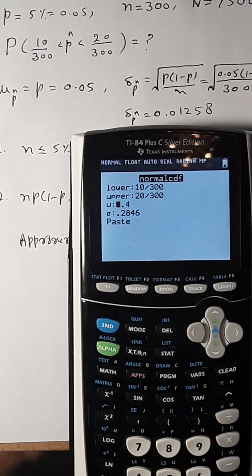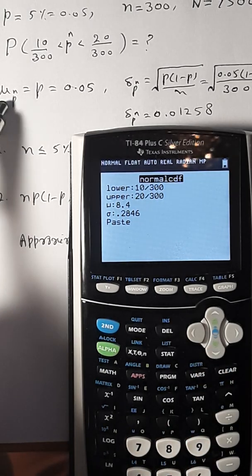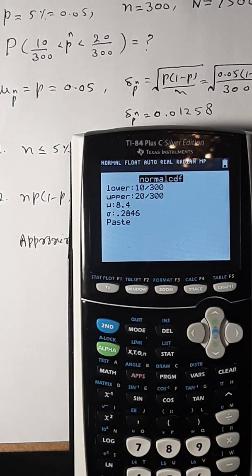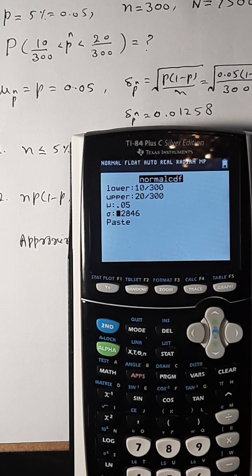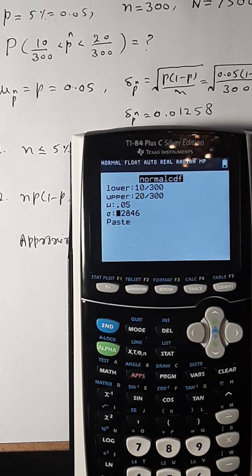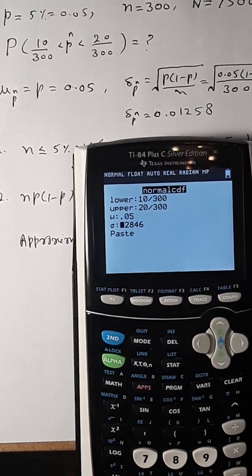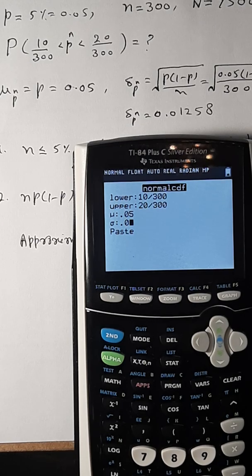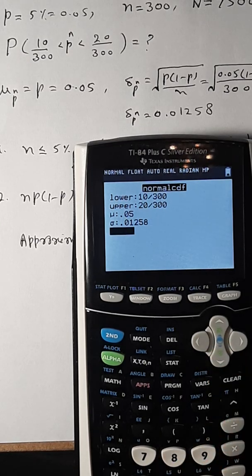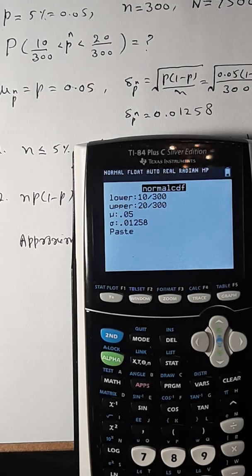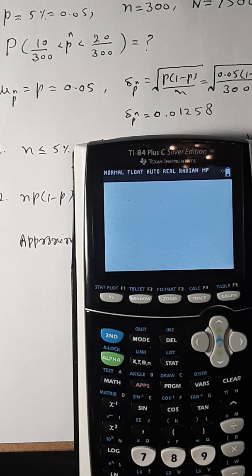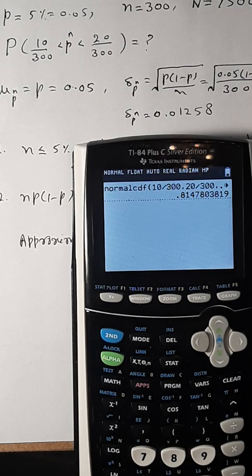Then mean, so mean is 0.05. And then standard deviation is 0.01258. And then paste and highlight paste and press enter. Enter again.